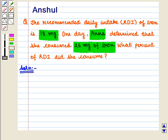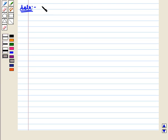We have to find what percent of RDI, i.e., recommended daily intake, did she consume. Now, the percentage of RDI should be equal to the amount consumed by Anna.